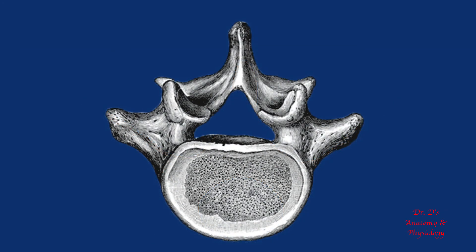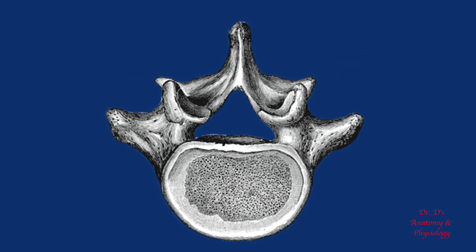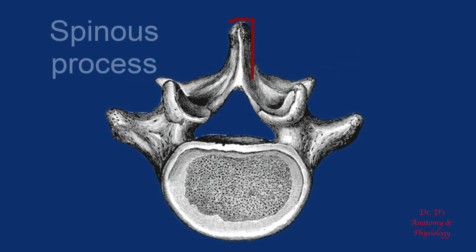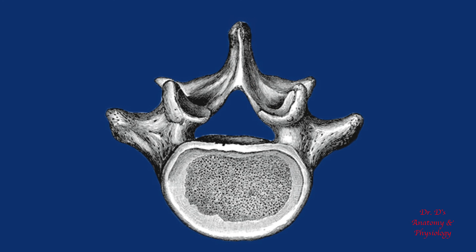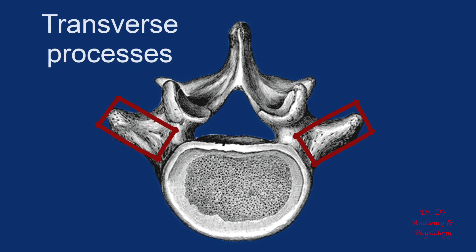Finally, let's look at a lumbar vertebra and the same processes. We can see again the superior and inferior articular processes. Extending from the top of the neural arch is the spinous process, which in the lumbar vertebra is somewhat wider and shorter. Extending again from the sides of the neural arch, we have the transverse processes.